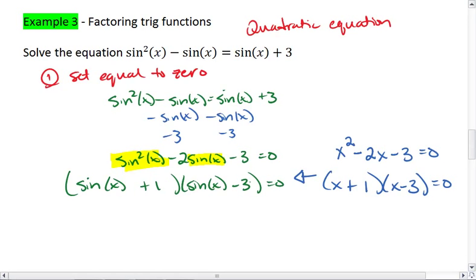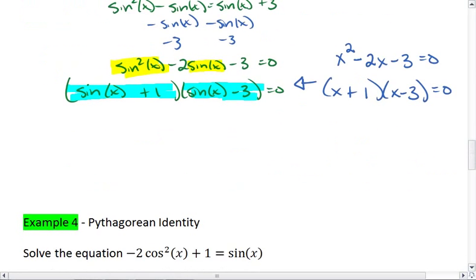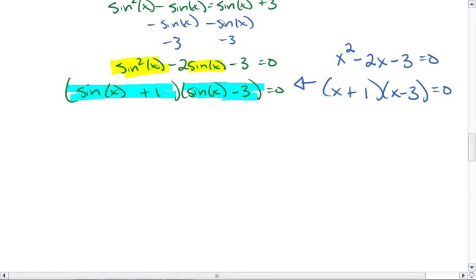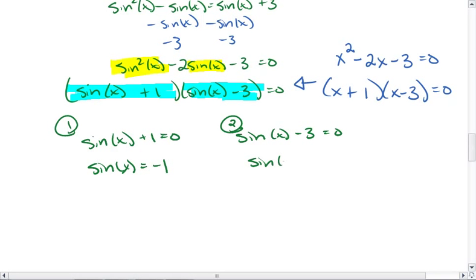Now we just need to solve both of these equations, setting them equal to 0. We get sin(x) + 1 = 0 and sin(x) - 3 = 0. This gives us sin(x) = -1, sin(x) = 3.